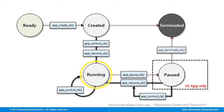Two callbacks can affect the state. First is the app control callback. As you can see, this callback is also available in the created and paused states. This enables exchange of information, more so calling another app on top of it. This basically leaves the current app in the running state.